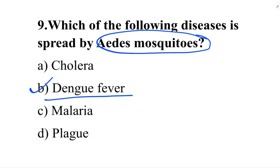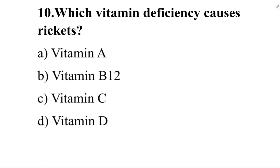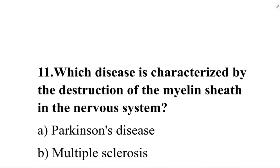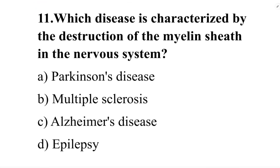Next question: which vitamin deficiency causes rickets? Option A: vitamin A. Option B: vitamin B1. Option C: vitamin C. Option D: vitamin D. The correct answer is option D, vitamin D. Rickets is caused by the deficiency of vitamin D.